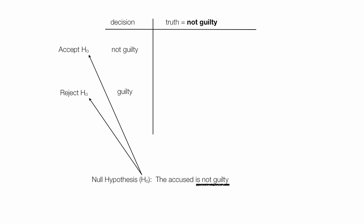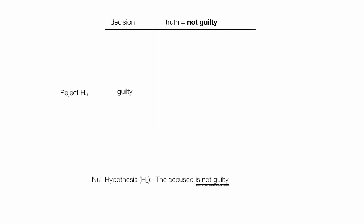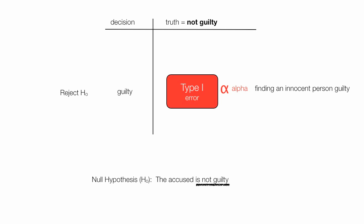H0 is the symbol or shorthand for null hypothesis. The first row is: we accept the null hypothesis and we say the accused is not guilty, which turns out to be the reality in this case — and that's good. On the other hand, if we reject the null hypothesis and say the defendant is guilty, we commit a type 1 error, alpha.